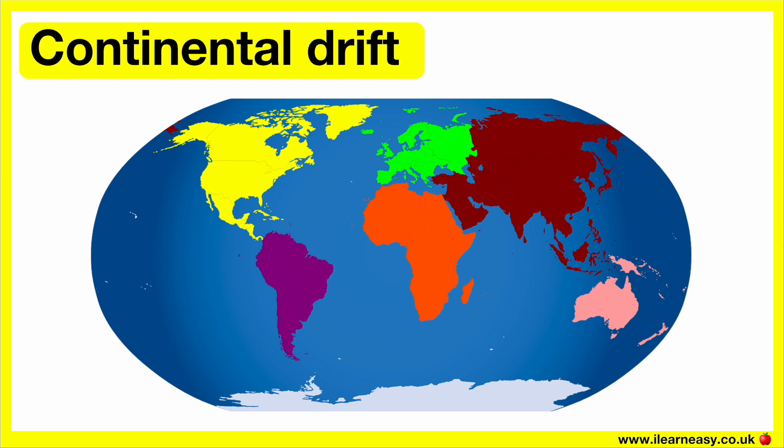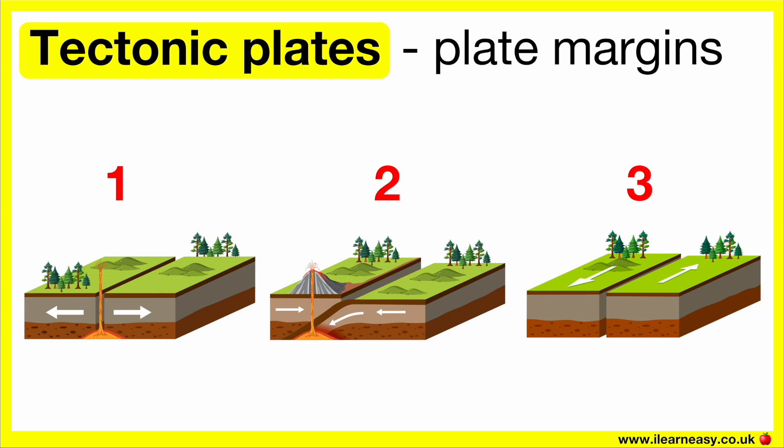The heat and pressure in the earth results in convection currents in the mantle layer of the earth. This causes the tectonic plates to move around. Tectonic plates meet each other at their plate margins. There are three types of plate margins, and the type depends on the type of movement that occurs.